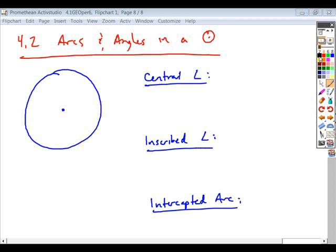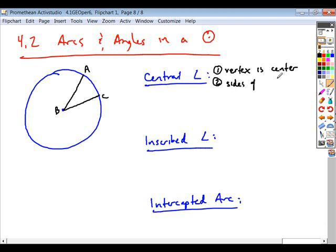When we talked about a central angle, there were two properties. The vertex of a central angle is located where? The center. And the radii, or the sides of the angle, are radii.